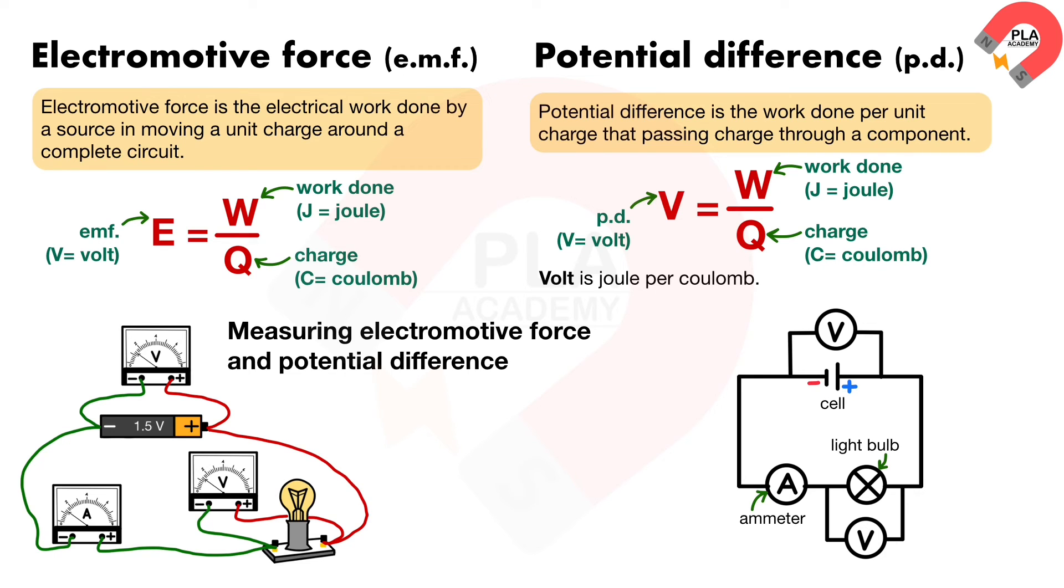This is an ammeter, which are two types as digital and analog. It is used to measure the current in a circuit. It must connect in series. Good ammeter should have low resistance to allow more charges to flow through it.